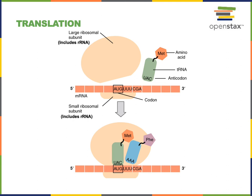The anticodon of the tRNA is complementary to the codon in the messenger RNA. The tRNA will transfer in an amino acid that corresponds to that codon following the genetic code to produce the primary sequence of the resulting polypeptide.